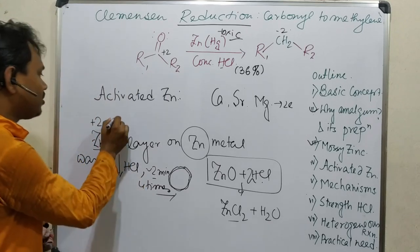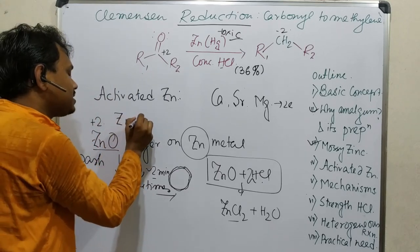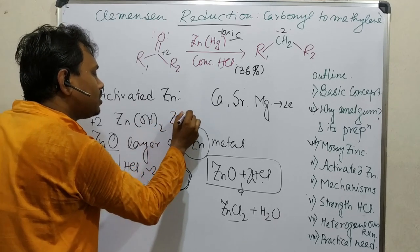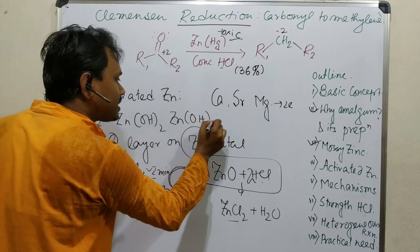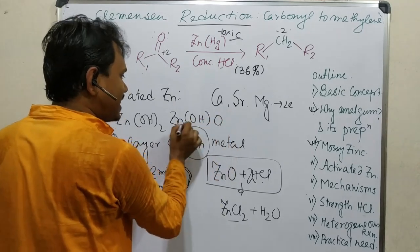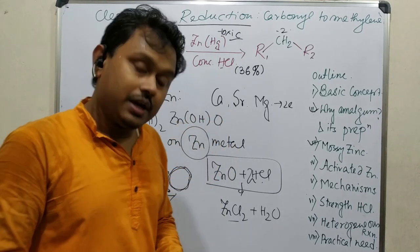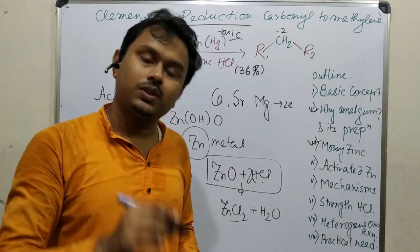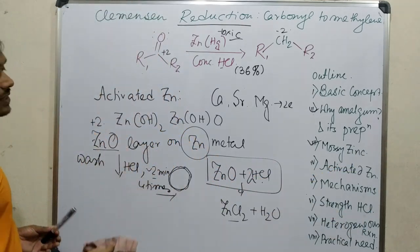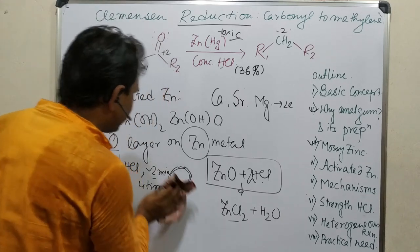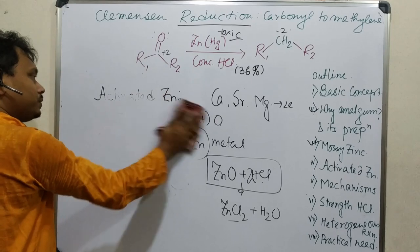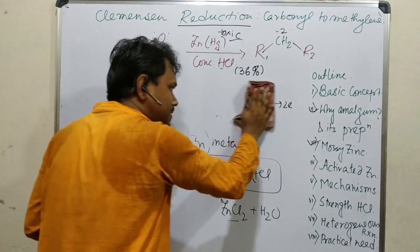Not only zinc oxide but also zinc hydroxide or mixed zinc oxy-hydroxide layers can form on the surface. All of these are removed by the acid wash. In this way, activated zinc is prepared, and this activated zinc is capable of reducing a carbonyl group to a methylene group in the absence of any mercury.